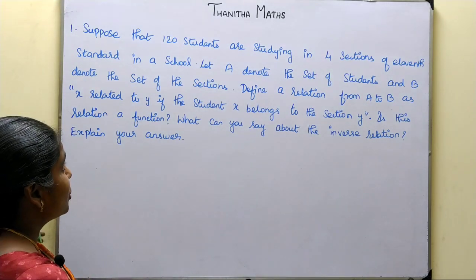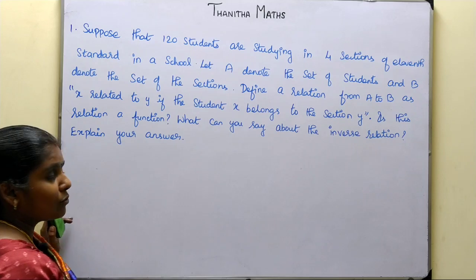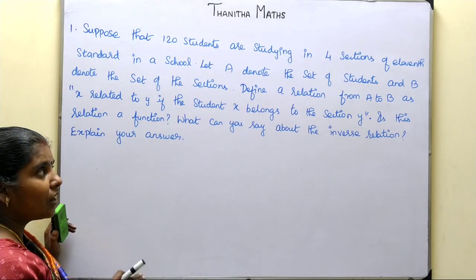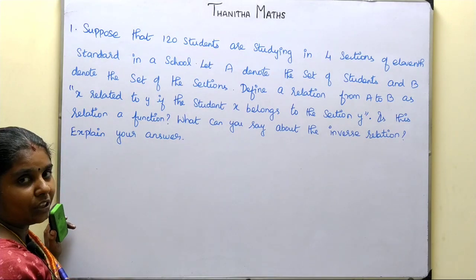So, if you have 4 sections, the total number of students is 120 students across 4 sections.